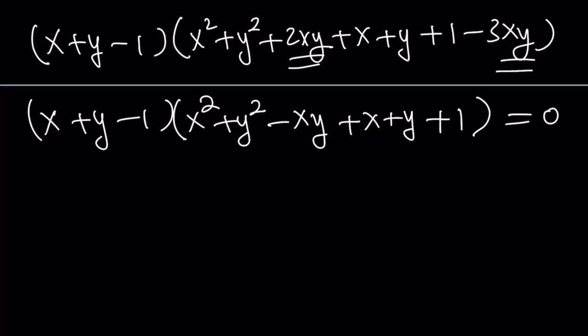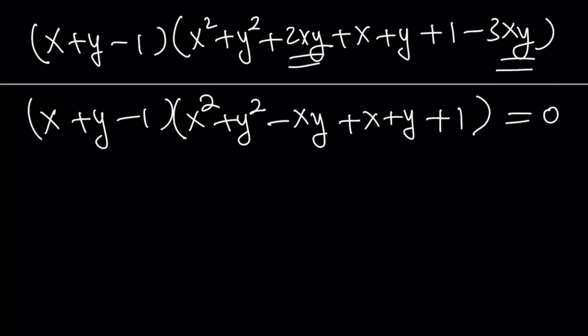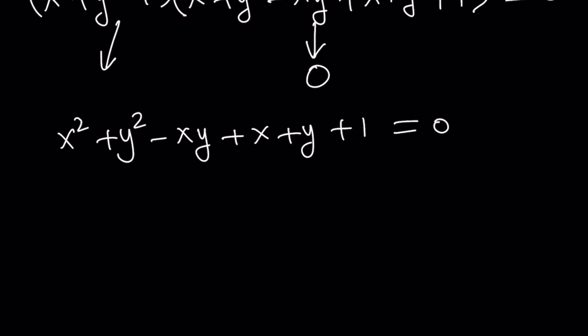Anyways. What am I going to do with these factors? Set each one equal to 0. This one is fairly easy, so we're going to deal with that later. Let's go ahead and set this factor equal to 0. When you set that equal to 0, you get x squared plus y squared minus xy plus x plus y plus 1 equals 0. Now, how do you solve for x and y here? There is one equation, there are two variables, and this is not a Diophantine equation. So, we're not necessarily looking for integer or rational solutions.